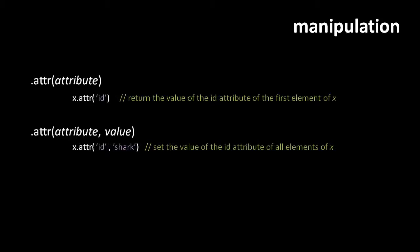The attr method is used to get and set the attributes of elements. To get a value, pass in the attribute name — x.attr('id') returns the value of the id attribute of the first element in x. To set an attribute, provide the new value as a second argument — x.attr('id', 'shark') sets the id attribute of all elements in x to 'shark'. Note the asymmetry: getting returns a value for the first element only, but setting applies to all elements.